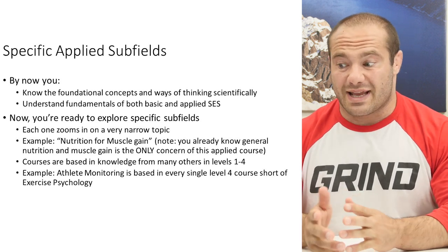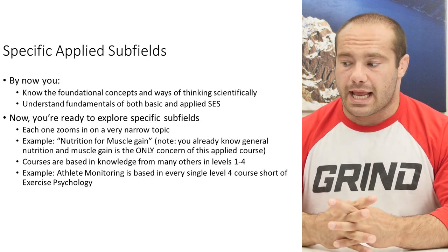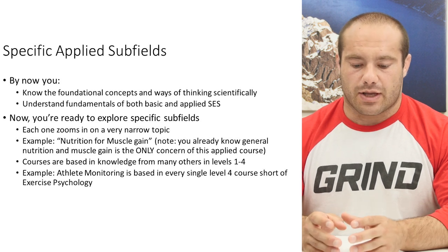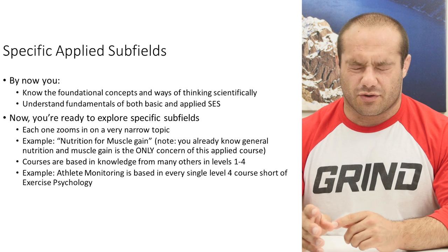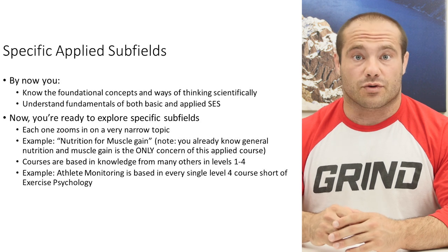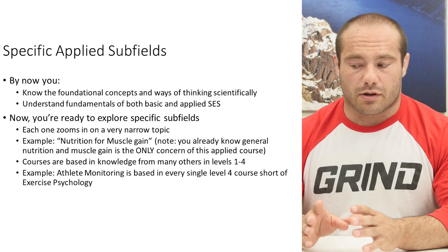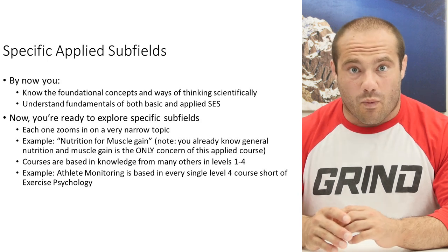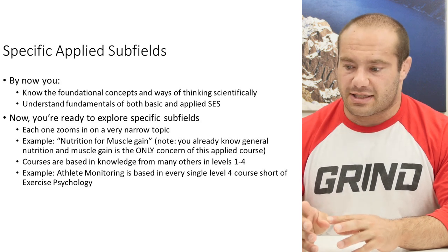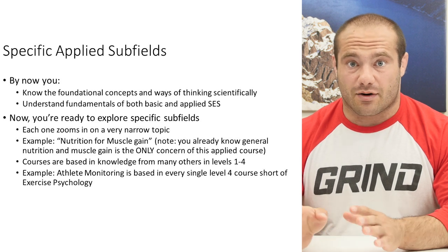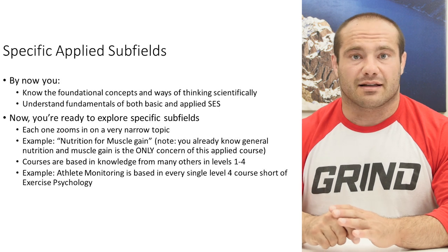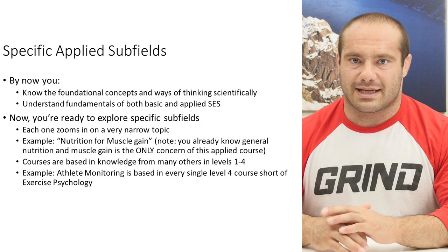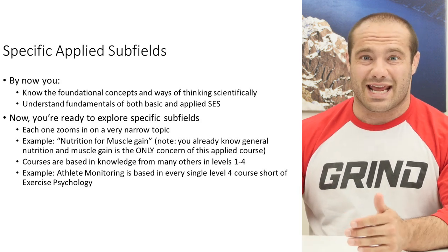These courses are based in knowledge from many others in levels one through four. Another really good example is the course athlete monitoring — a level five course on how to take athletes, measure various things about them to see if they're too fatigued, properly overloaded, or progressing well, and alter variables based on those monitoring indices. That course is based in literally every single level four course, except maybe exercise psychology, because sports psychology is what applies to athletes. So when you take level five courses, expect them to be based in almost the entire backbone curriculum.